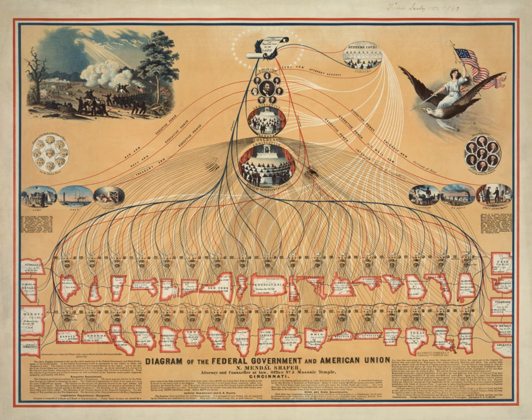The executive power in the federal government is vested in the President of the United States, although power is often delegated to the cabinet members and other officials. The President and Vice President are elected as running mates by the Electoral College, for which each state, as well as the District of Columbia, is allocated a number of seats based on its representation in both houses of Congress. The President is limited to a maximum of two four-year terms.